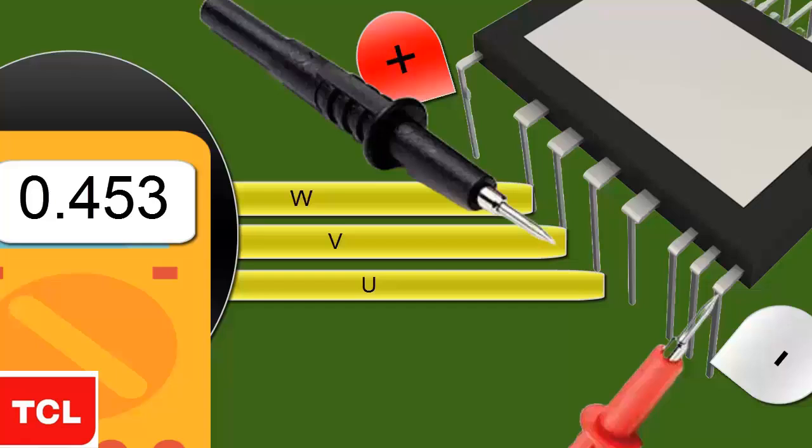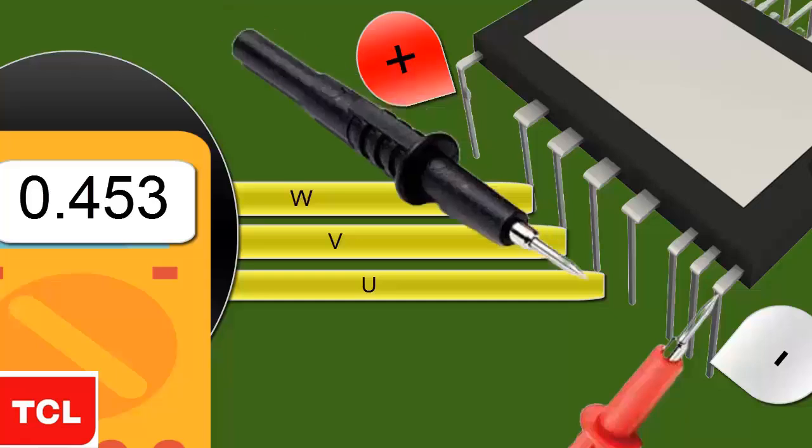The minimum voltage activation values should be similar to those obtained previously. The measurement obtained between the negative supply and each pin, UVW, should yield practically the same reading.